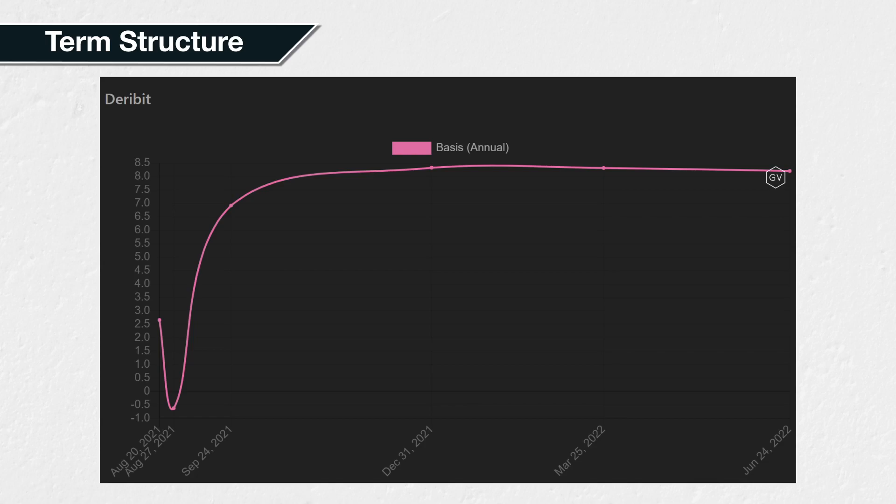This is an example of a term structure for the Bitcoin futures contracts on Deribit. What this chart is showing is the premium of each of the different future expirations over the spot price. Rather than the dollar amount, this is showing the premiums as an annualized percentage to allow for better comparison.